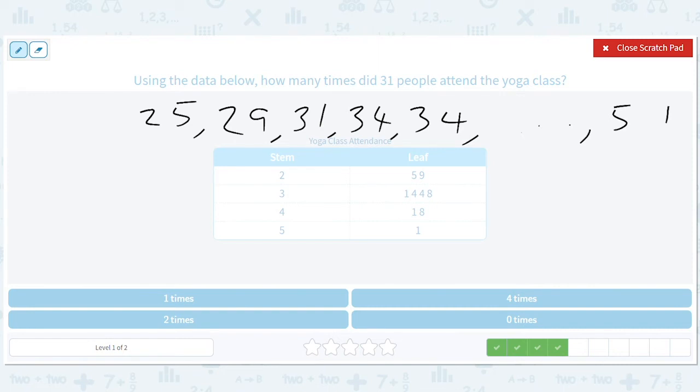But how many times did 31 people attend the yoga class? Well, I think a way of saying that that may be less confusing is how many days were there when 31 people showed up, right? And there was one day like that. So let's go with one.